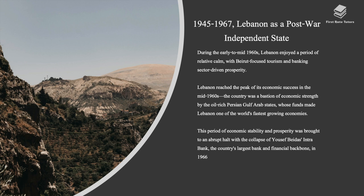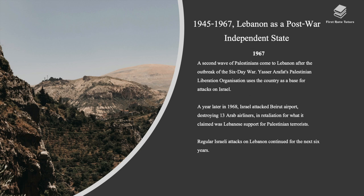Lebanon reached the peak of its economic success in the mid-1960s. The country was a bastion of economic strength, backed by the oil-rich Persian Gulf Arab states, whose funds made Lebanon one of the world's fastest-growing economies. This period of economic stability was brought to an abrupt halt with the collapse of Intra Bank, the country's largest bank, in 1966. In 1967, a second wave of Palestinians came to Lebanon after the Six-Day War. Yasser Arafat's PLO used the country as a base for attacks on Israel. In 1968, Israel attacked Beirut airport, destroying 13 Arab airliners in retaliation. Regular Israeli attacks on Lebanon continued for the next six years.